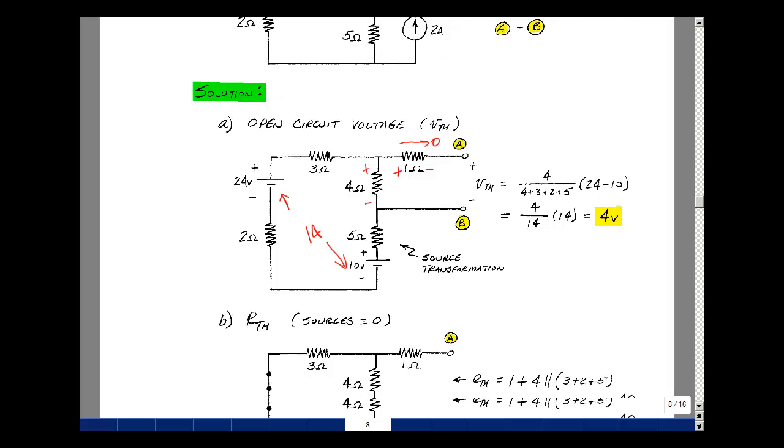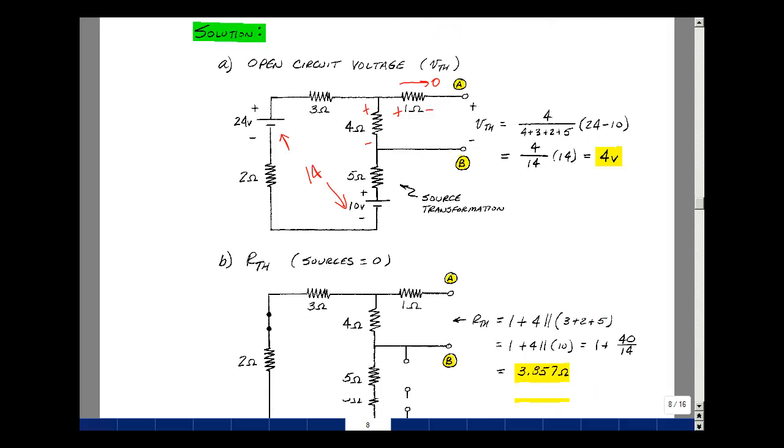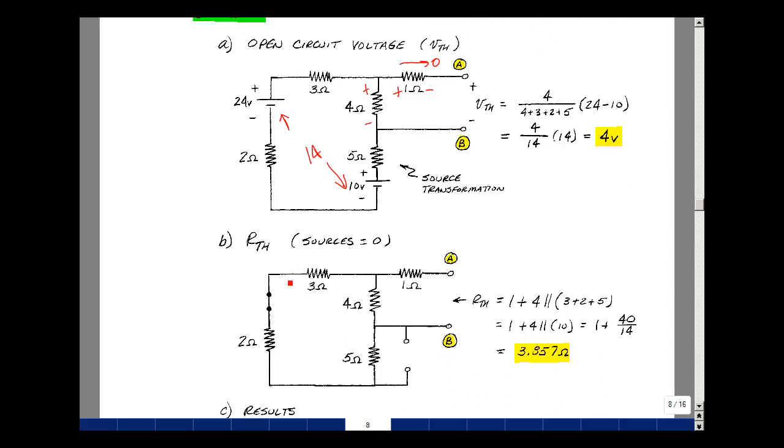Now to find the Thevenin resistance, we're going to set all the independent sources equal to zero. In this case, it's a short circuit for the 24 volt battery, and an open circuit for the current source that was here, or you could short that 10 volt source.